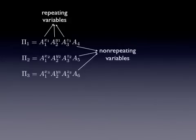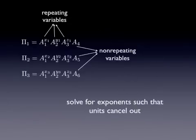In addition, each variable has the non-repeating variables, a4, a5, a6, which only appear once in each variable and they are raised to the power of 1. Mathematically, what we need to do is evaluate these exponents. We need to solve for these exponents such that the units cancel out.